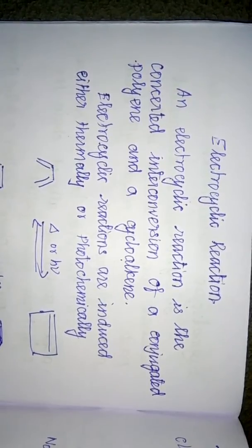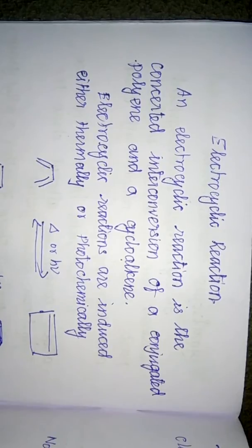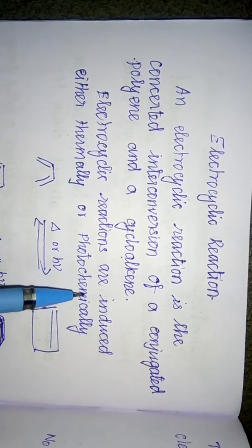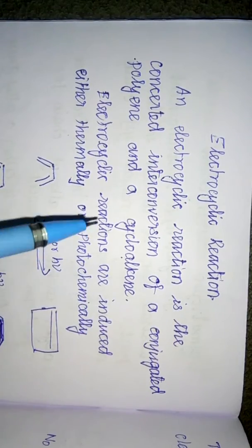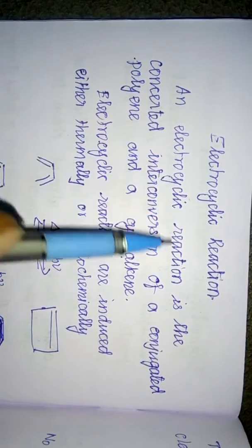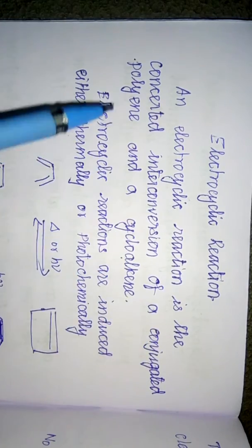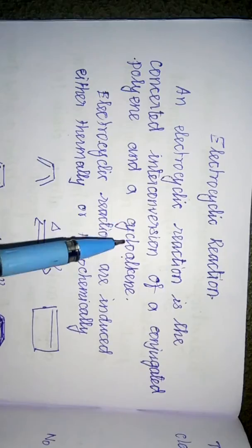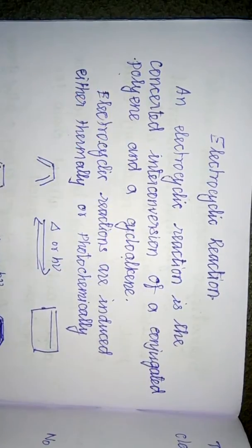Welcome back to this class. In this class we will see electrocyclic reactions from unit number six. Electrocyclic reactions are of two types: electrocyclic opening of the ring and electrocyclic closure of the conjugated systems. They are induced either thermally or photochemically. Electrocyclic reactions are concerted interconversion of conjugated polyenes and cyclic alkenes.